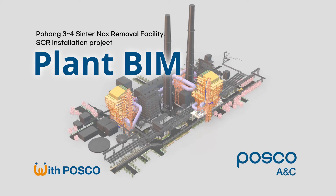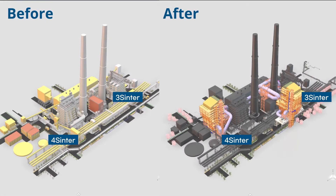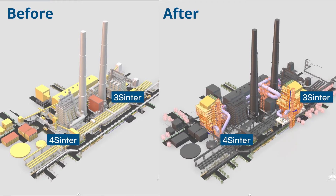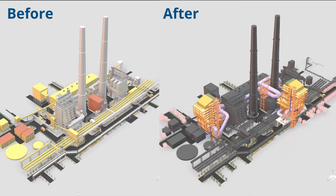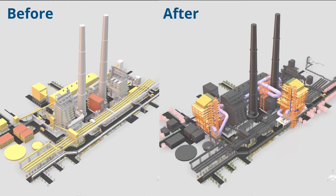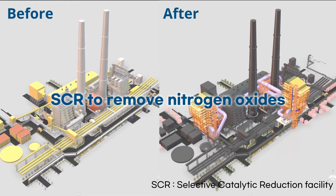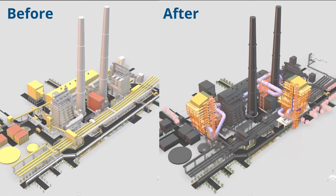This is our plant BIM application example of POSCO Sinter plant. This project is to install a new selective catalytic reduction facility, so-called SCR, inside of the Sinter plant area, so that it can remove nitrogen oxides generated during the process of sintered ore production.